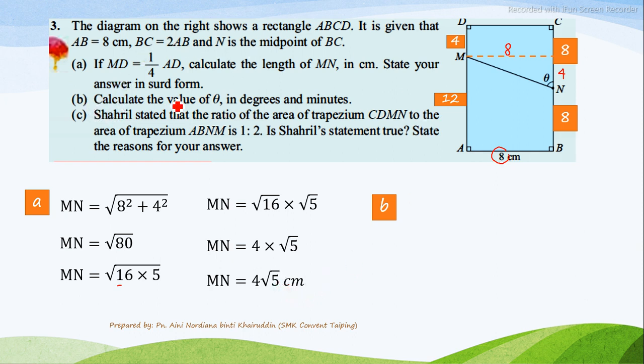Question B, calculate the value of theta in degrees and minutes. So this is theta. Since you know the opposite and the adjacent sides, you can use tangent. So theta equals to 63 degrees and 26 minutes.